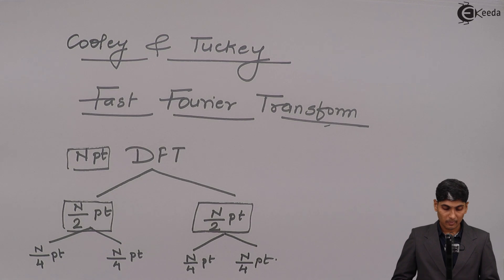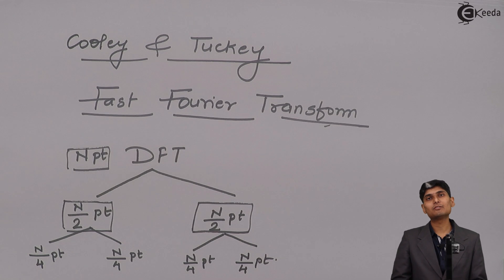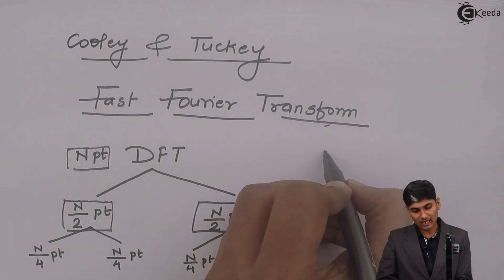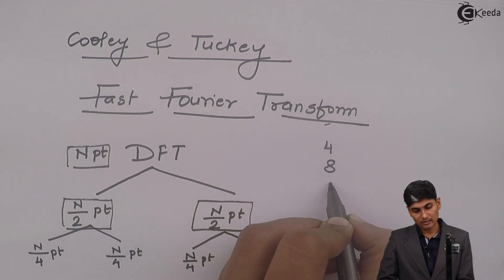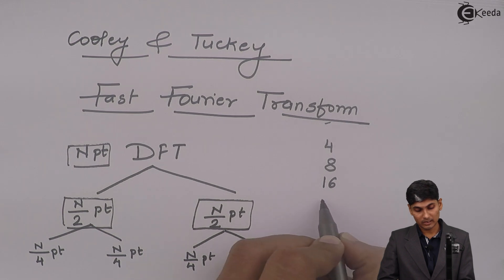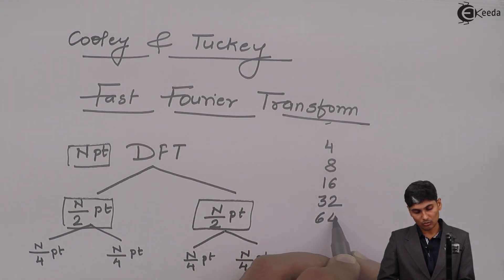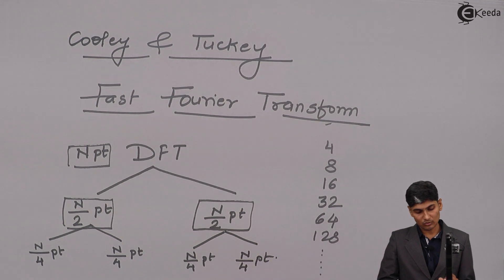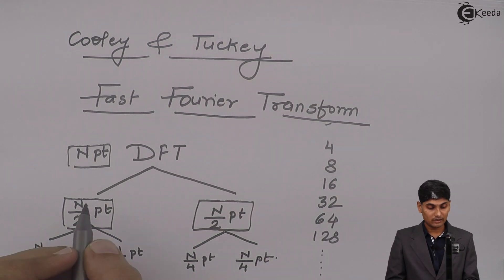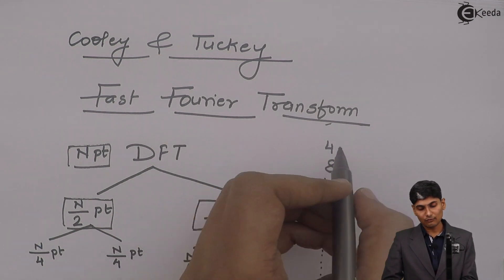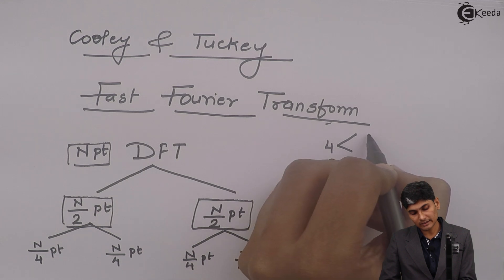This requires that the N-point DFT should be divisible. That means I should be able to divide the N point into two halves. It is only possible if my N is a multiple integer of 2. That means if I have sequence as 4, 8, 16, then 32, then 64, 128, and so on and so forth. Then only this division is possible because a 4-point DFT can be further split as a 2-point DFT.